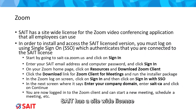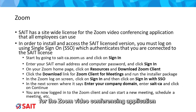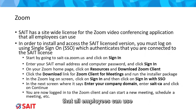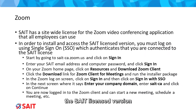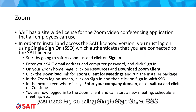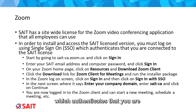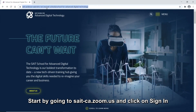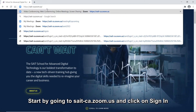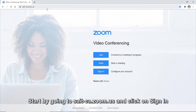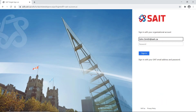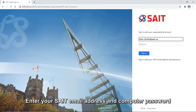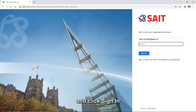SAIT has a site-wide license for the Zoom video conferencing application that all employees can use. In order to install and access the SAIT licensed version, you must log in using Single Sign On, or SSO, which authenticates that you are connected to the SAIT license. Start by going to SAIT-CA.zoom.us and click on Sign In. Enter your SAIT email address and computer password, and click Sign In.